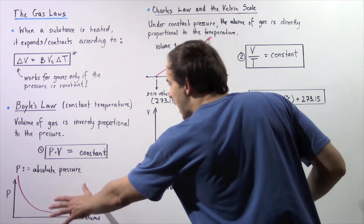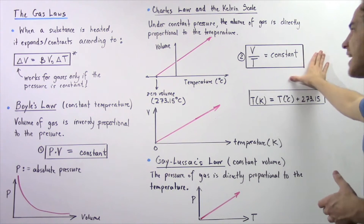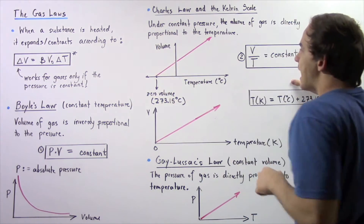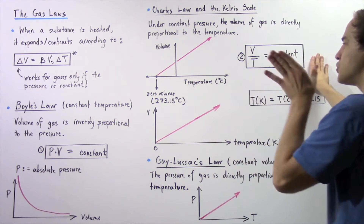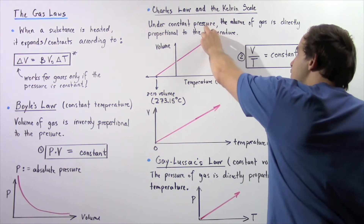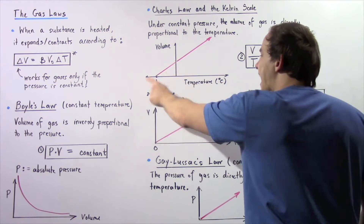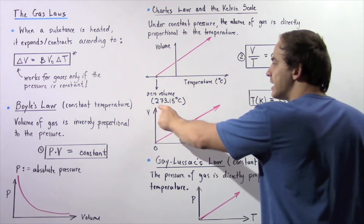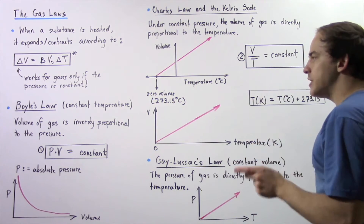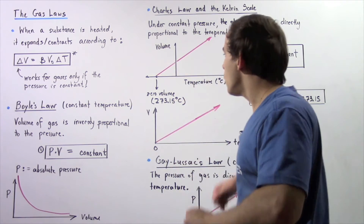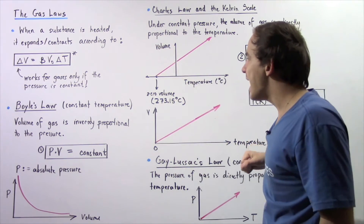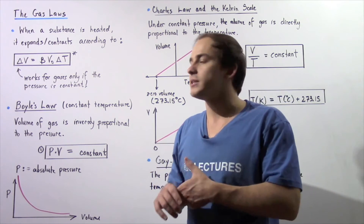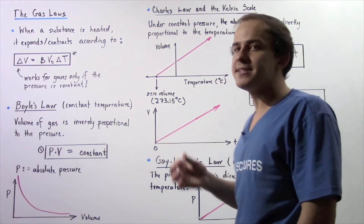We can also graph this relationship in the same way. The y-axis is the volume of our gaseous system and the x-axis is our temperature given in Celsius. If we follow the slope all the way down to where it touches the x-axis, we reach something known as the absolute temperature, given by negative 273.15 degrees Celsius. At this temperature, the volume of our gas would be zero, which is impossible because our molecules always have at least some volume. So that means this temperature is unattainable.